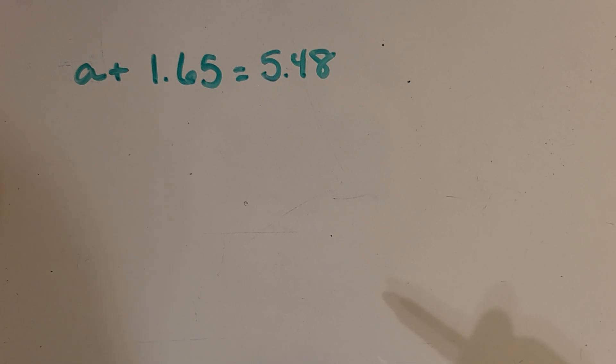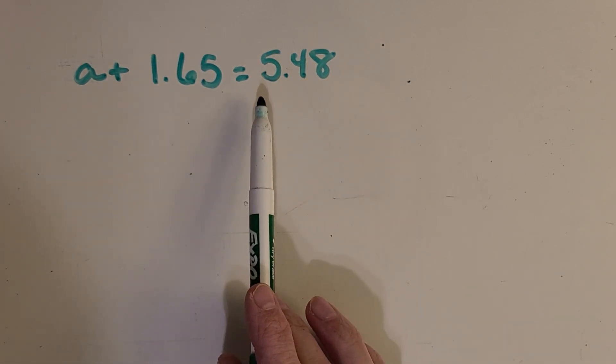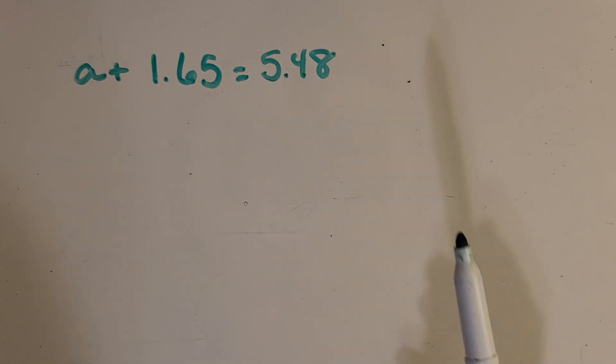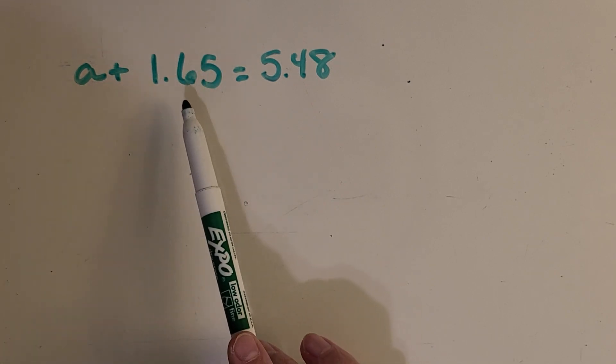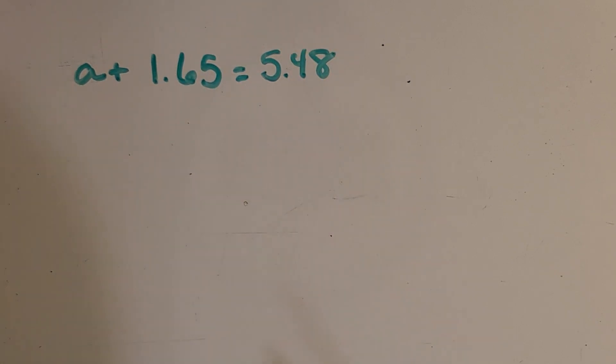And so now the thing to think about is that in the last video, we were looking at equations as a scale or a balance. One side needs to equal the other side. And so with that, knowing that if you do something to this side, you need to do that same thing to the other side is very important.